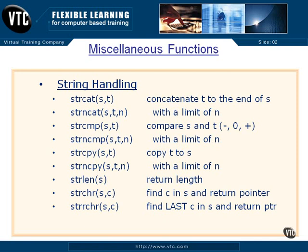Here are some string handling functions. strcat (S-T-R-C-A-T) will concatenate the second string to the end of the first string. All of these S and T are string pointers through these samples, and N is an integer. These Cs down here are single characters. strncat also does a concatenation — it concatenates T to the end of S, but only for N characters. So you have three parameters to strncat, so you won't overrun the end of S.